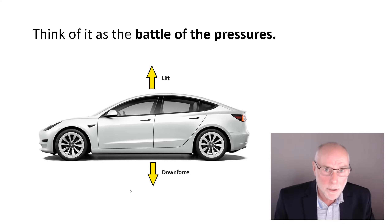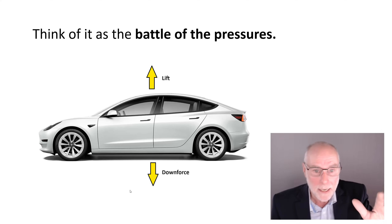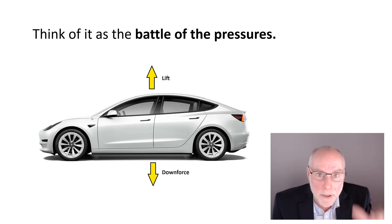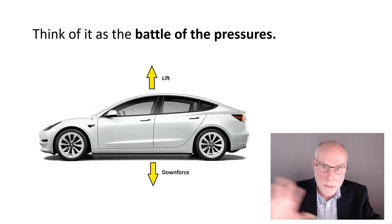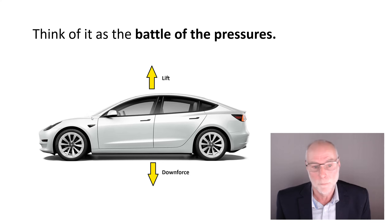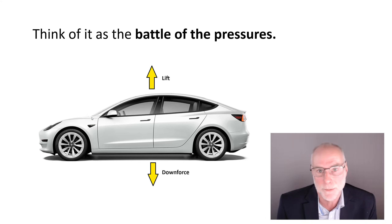Low pressures on top are trying to lift the car. Low pressures underneath are trying to pull the car downwards. Any high pressures on top of the car, like we saw at the base of the windscreen, are trying to push the car downwards. There's all these different air pressures occurring all over the car — it's not just a case of saying that's all high pressure or all low pressure. There are variations in these pressures.